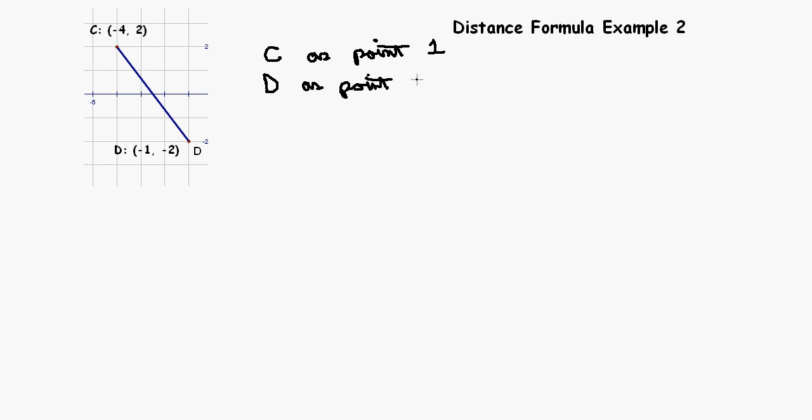We'll use the distance formula, where the distance from C to D is equal to the square root of x2 minus x1 squared plus y2 minus y1 squared.